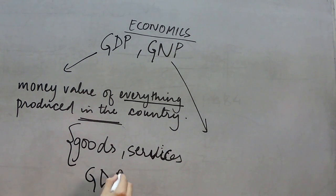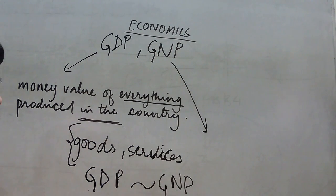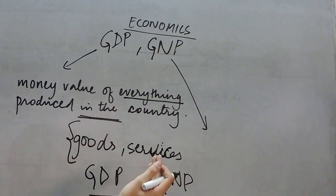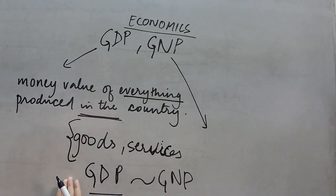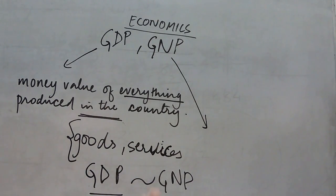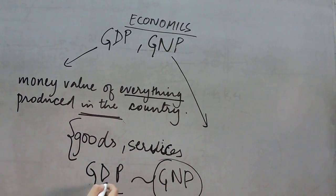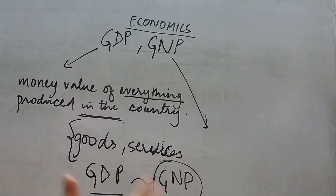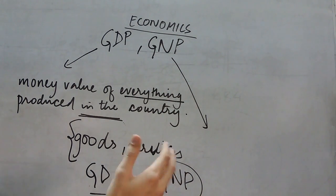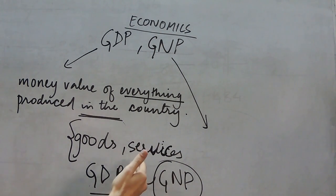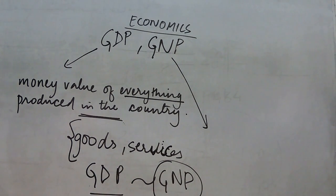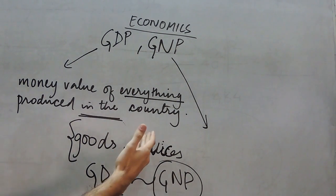To get a relationship between GDP and GNP: if we add the money value of everything that has been produced by Indians abroad, and subtract the money value of everything produced by foreigners in India, we will get the GNP of India. Therefore, GDP and GNP can be related by calculating the money value of everything that Indians have produced outside the territories of India, and the money value of everything that foreigners have produced inside the country. Both GDP and GNP are equally good indicators of the economy.